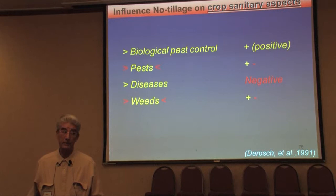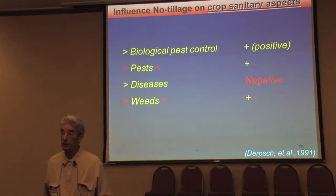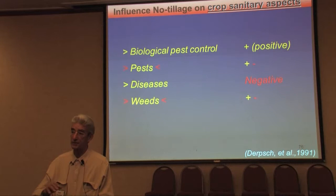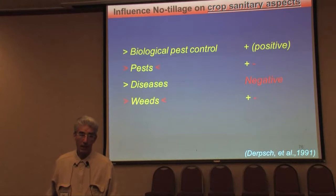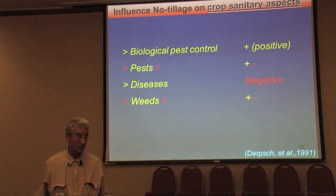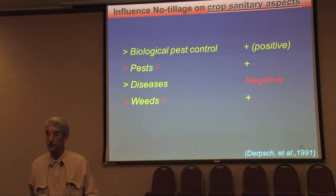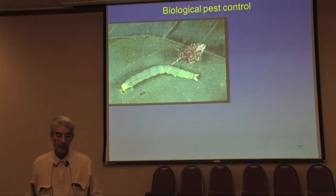Diseases — here we have a negative point. Generally, crops are more vulnerable to diseases because diseases stay in the residue. When the next crop comes, the residue just stays on top, so we have more possibilities of infection of the next crop. And weeds — it's more or less depending mainly on management. If you manage with good crop rotation and cover crops, it's going to be less. If you manage badly with monoculture and poor practices, it may be more.